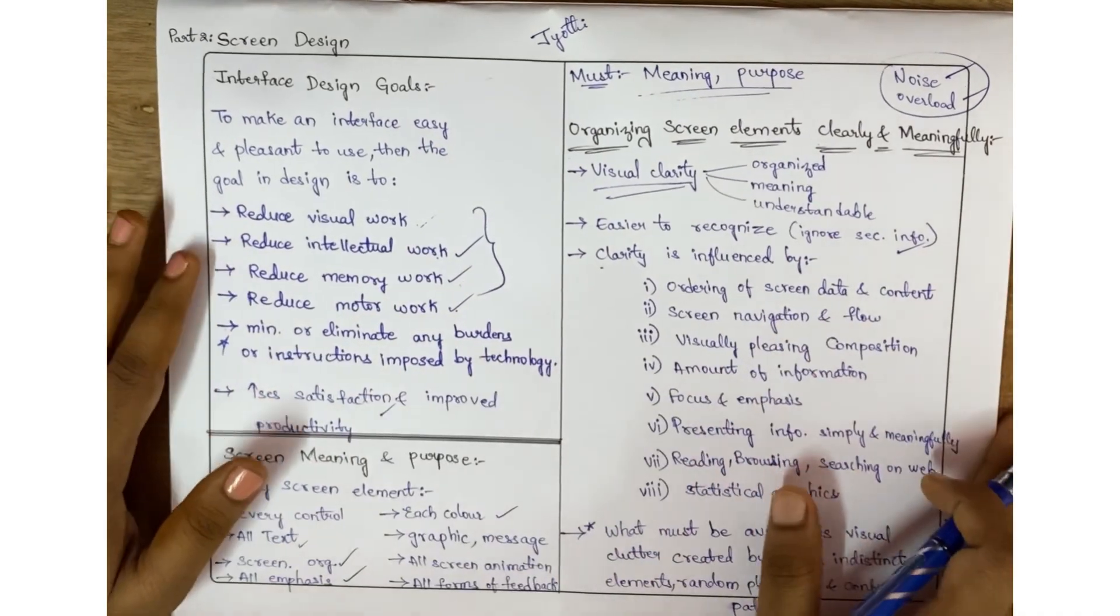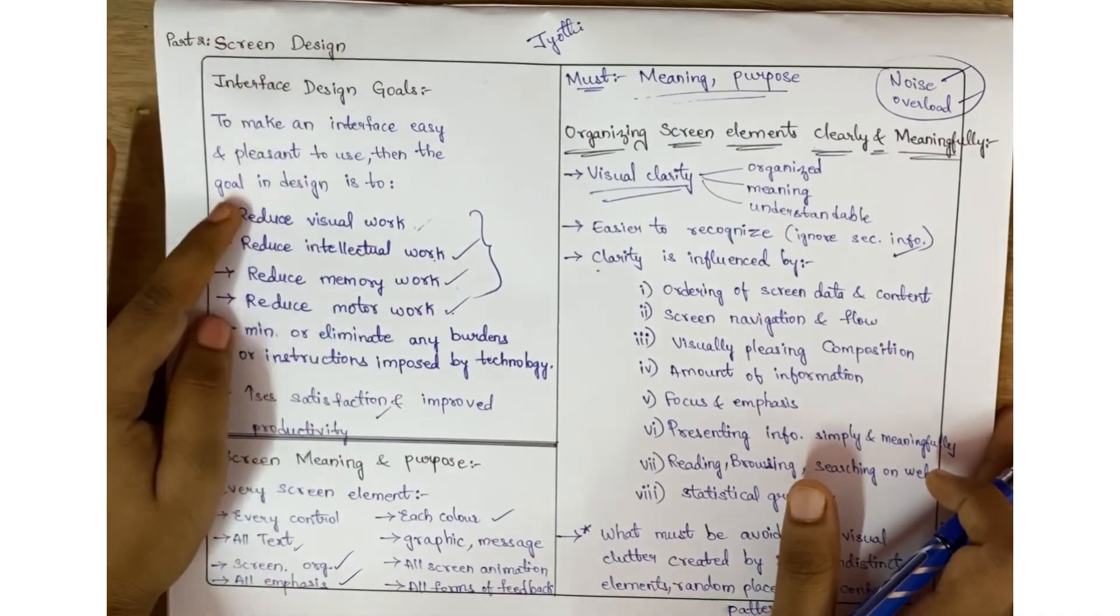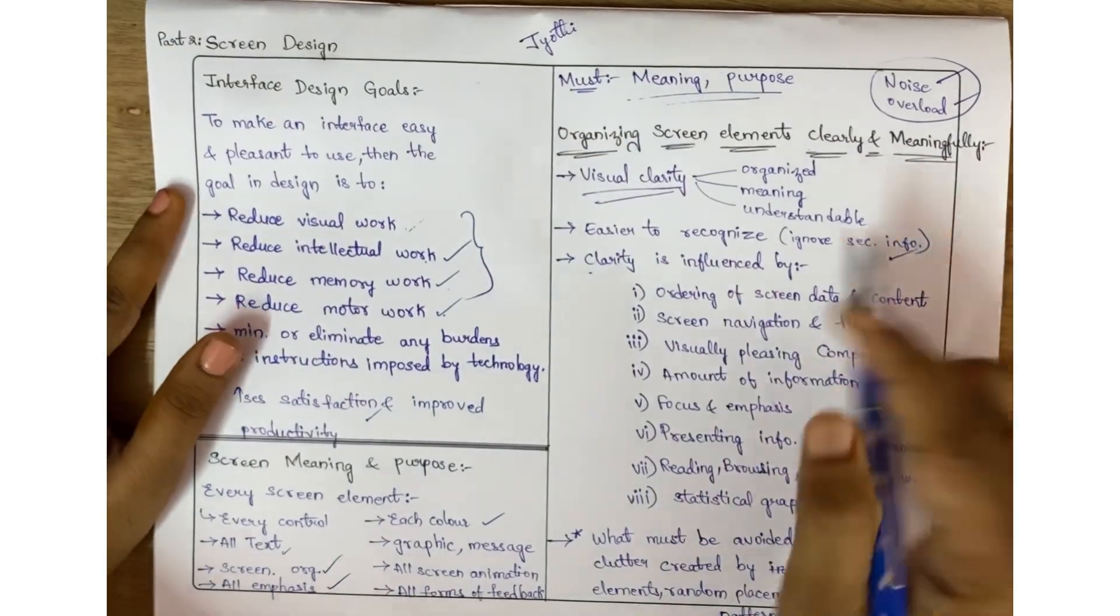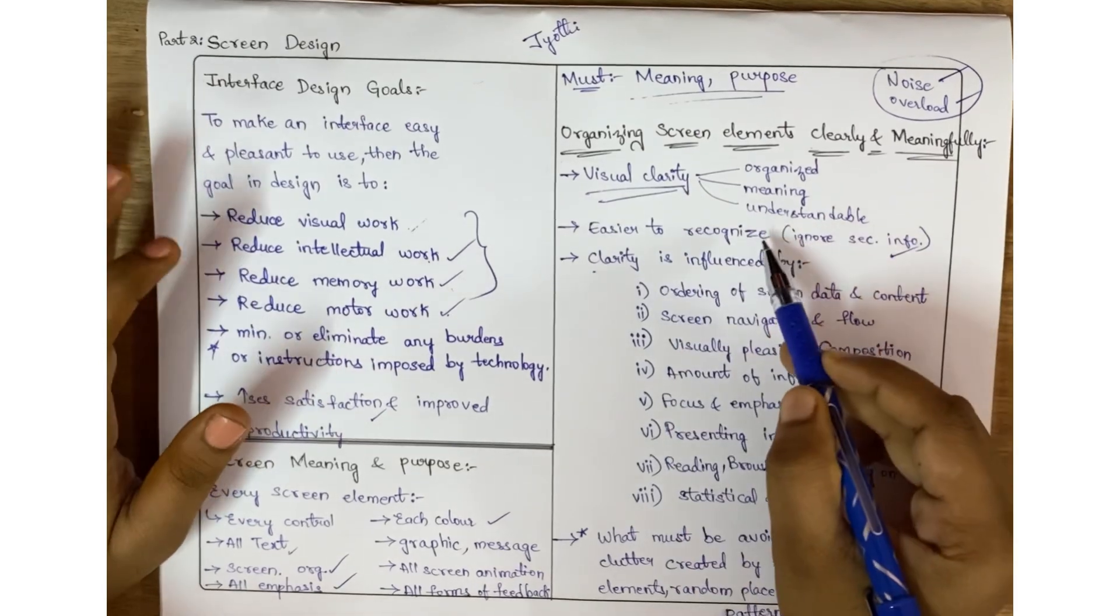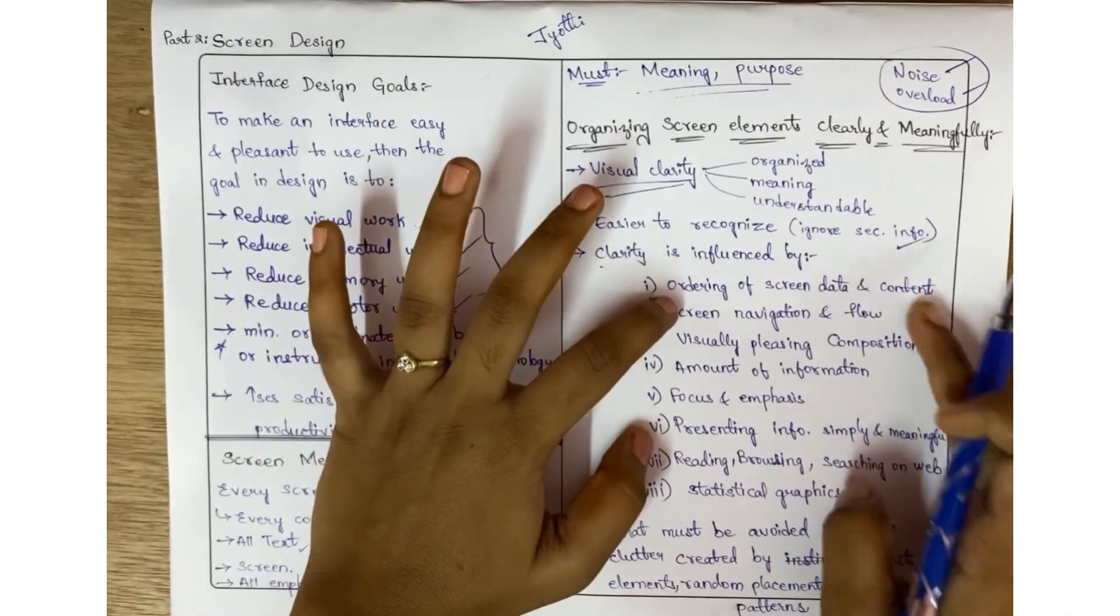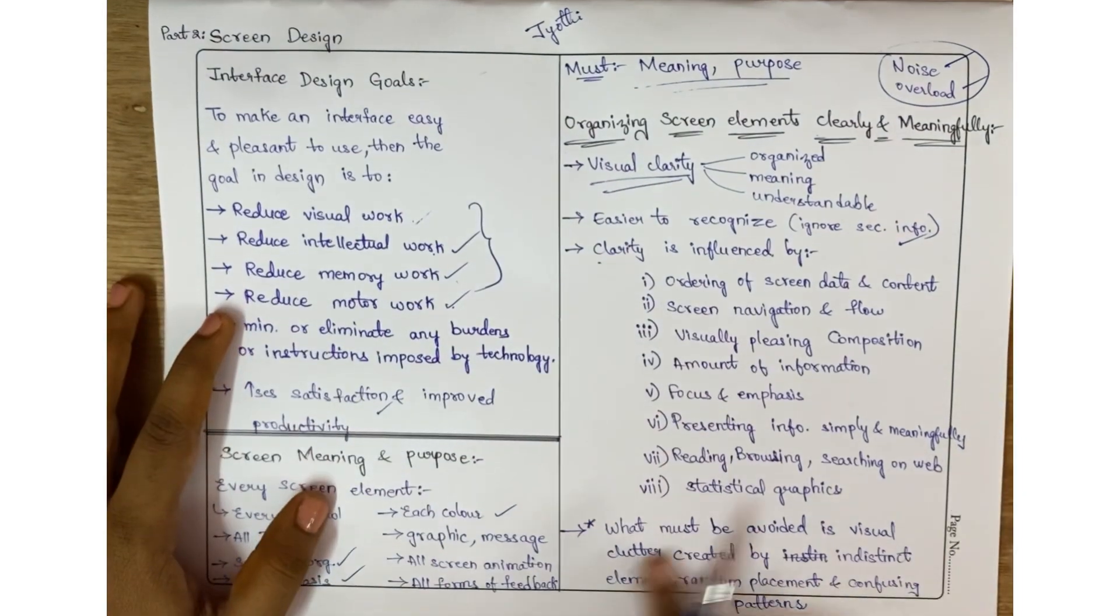This is very simple. We covered four goals, the meaning and purpose of screen elements, and organizing. It gives visual clarity and easy recognition. Clarity is influenced by some parameters, which we'll discuss in the next video, and we need to avoid visual clutter.